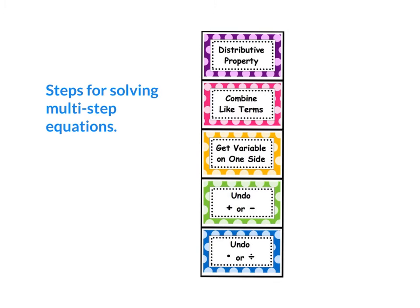Steps for solving multi-step equations: first, distribute. Then combine like terms. Then get the variable on one side. Undo by adding or subtracting. And then undo by multiplying or dividing.